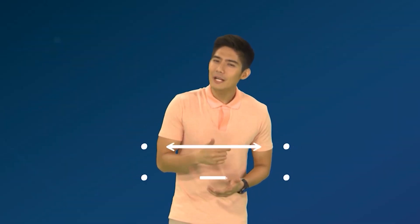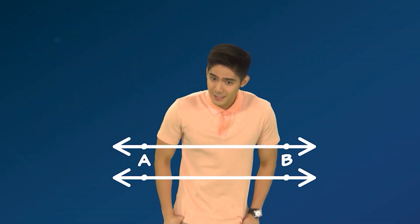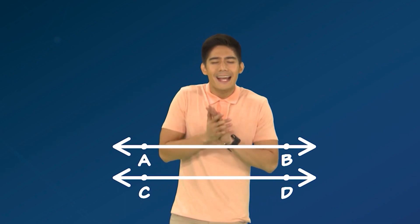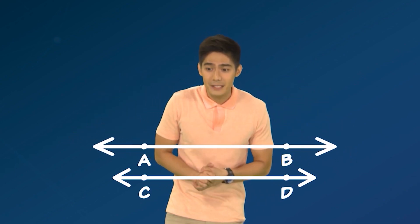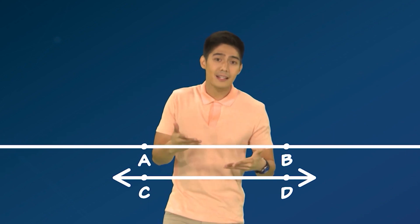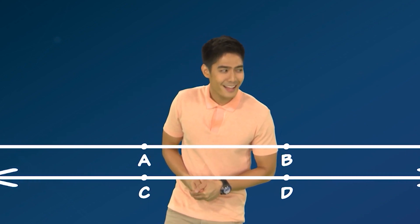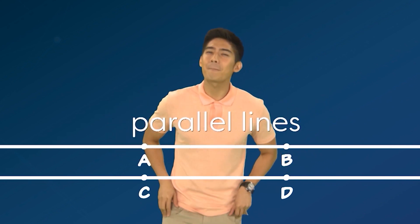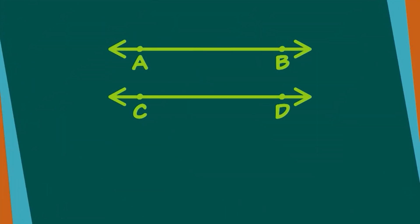Halimbawa, ang dalawang lines ito ay tatawagin natin line AB at line CD. Kahit ganong kalayo ang abutin ng line AB at ng line CD, hindi sila magtatagpo. Ang ganitong klaseng lines ay tinatawag na parallel lines. Para maisulat kong parallel lines ang dalawang line, ginagamitan ito ng parallel simbol. Ganito lalabas. Line AB is parallel to line CD. Ang parallel sign ay dalawang guhit na parang equal sign, pero nakatayo.